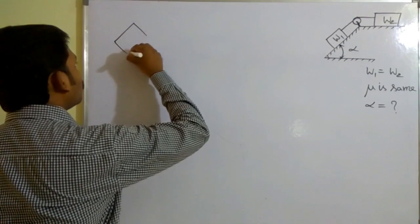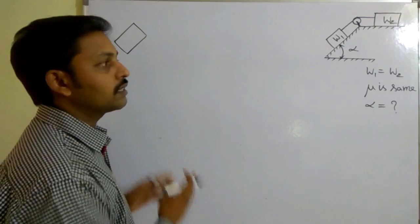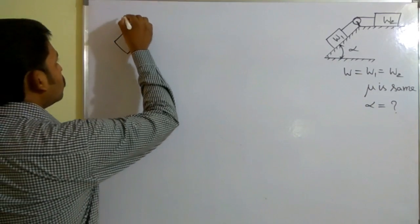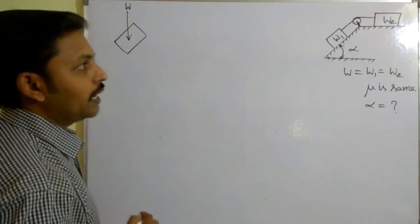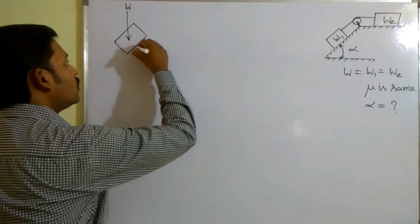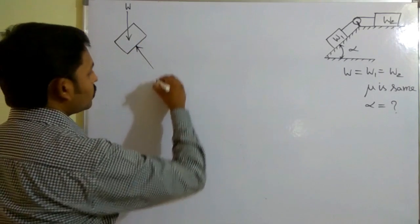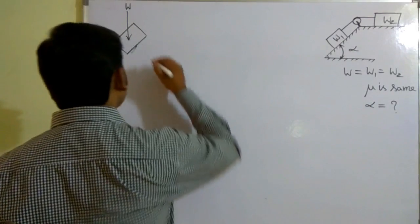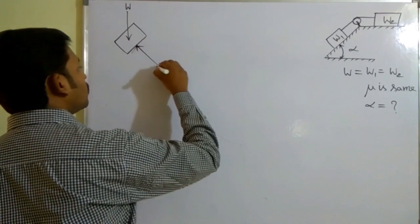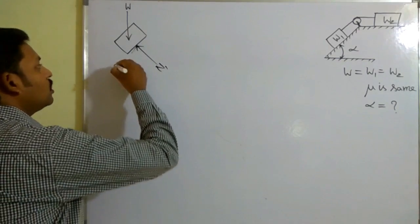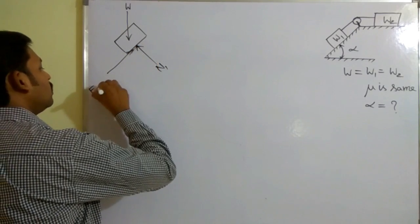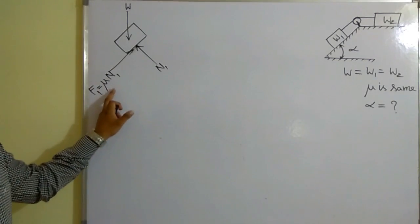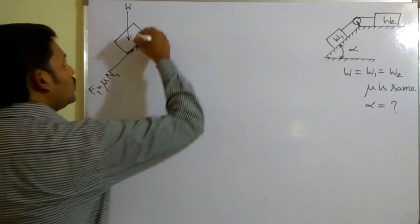First, I will consider a free body diagram for block one, W1. To draw the free body diagram, I need to remove all contact surfaces and represent the block as it is. W1 is equal to W2, so I am considering them with the common letter W. Weight acts vertically downwards. The normal reaction is perpendicular to the surface in the opposite direction. The block has a tendency to move downward, so in the opposite direction represent the frictional force F1, which is equal to mu times N1. Mu is common for all surfaces. Along the string there will be a tensile force.